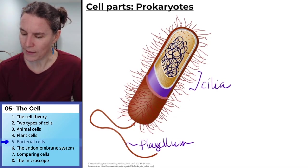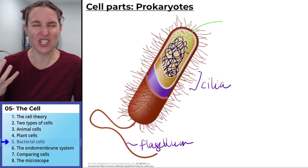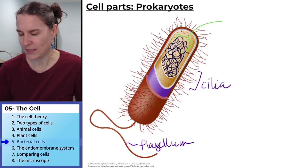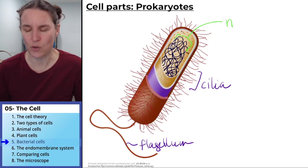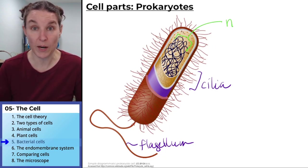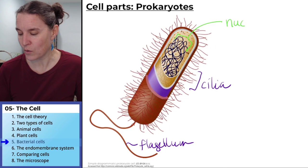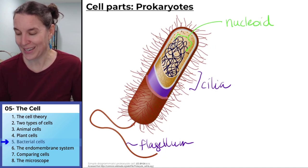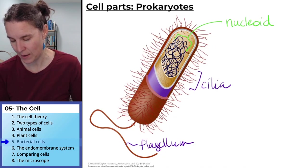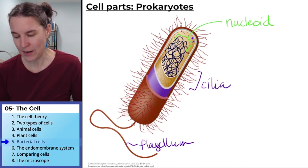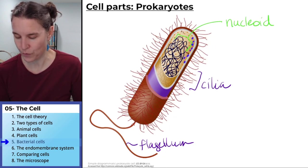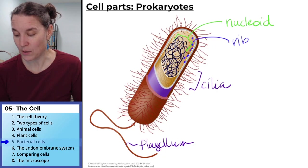Prokaryotes do have DNA, but it's found in a general area in the cell. That general area isn't the nucleus because there's no membrane surrounding it — it's called the nucleoid. And these structures here, which I'm coloring blue instead of orange, are ribosomes.